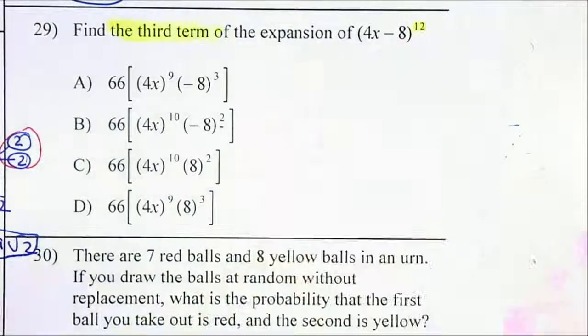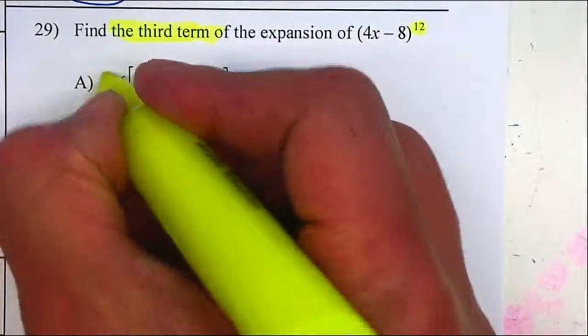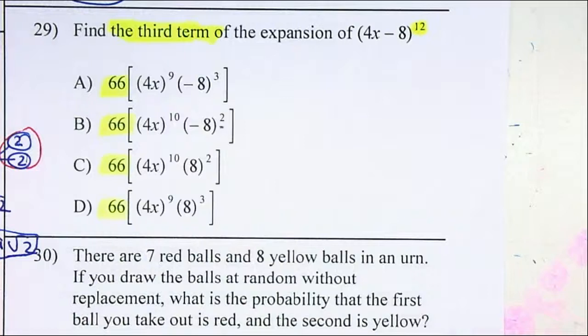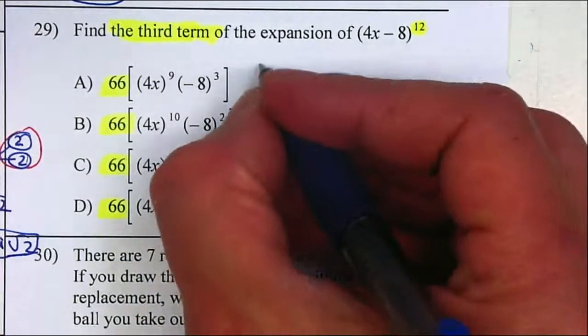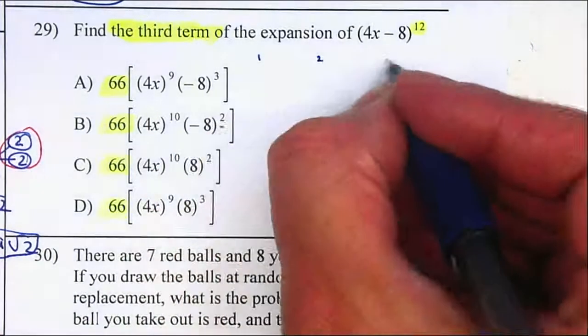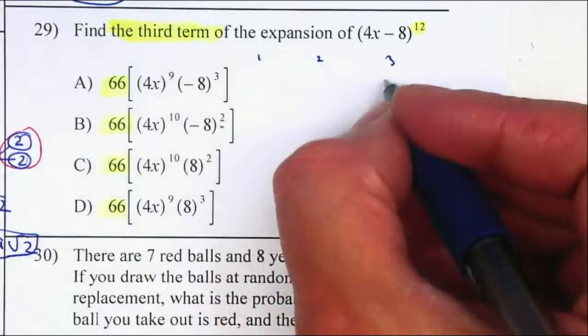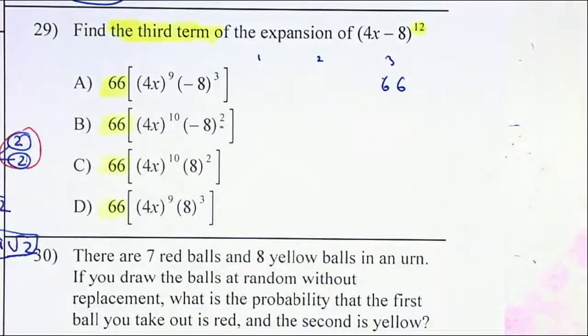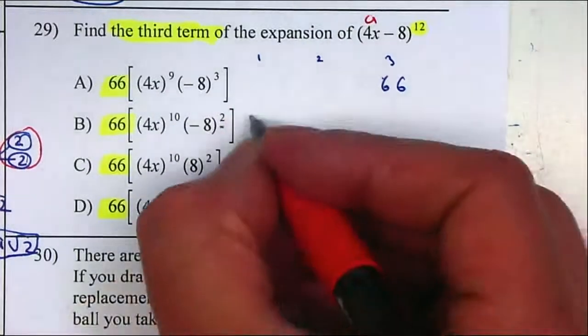Not really. If you notice, all of the first numbers are exactly the same, so I know that my third term should be the first, the second, and the third term. I know that my first term, the number will be 66. Now for the value of a will be 4x, so I know that this will be 4x.